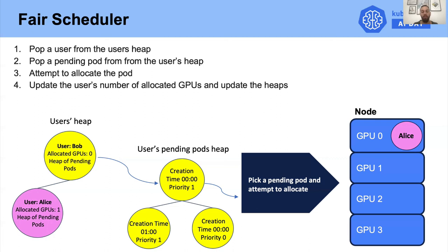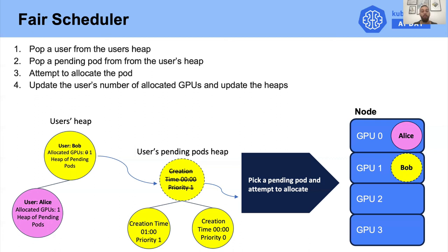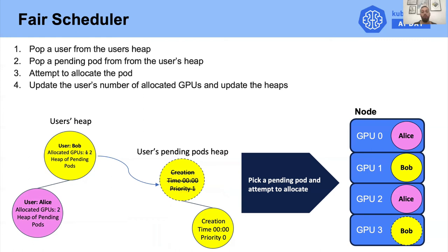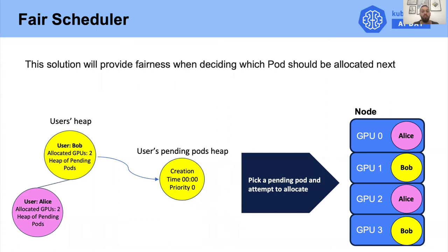Once again, we pop the first pod from Bob's pods and allocate it. We continue this flow until there are no more free GPUs in the cluster. Once we update the heap, Alice will move to the top again and we allocate her pod, and we do the same for Bob. As you can see, the GPUs are now shared fairly between Alice and Bob.